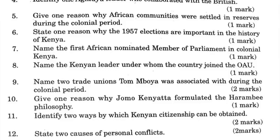Question 12: State two causes of personal conflicts. One, settling by outsiders or others. Two, inability to meet other people's expectations. Three, violation of other people's rights. Four, personality differences. Five, differences in opinion. Six, security threats, for example in marriage or the workplace.